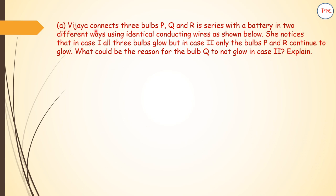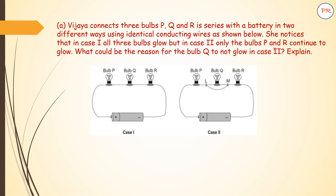Here there are two questions. Question A: Vijaya connects three bulbs P, Q and R in series with a battery in two different ways using identical conducting wires as shown below. She notices that in case 1, all three bulbs glow, but in case 2, only bulbs P and R continue to glow. What could be the reason for bulb Q to not glow in case 2? Explain.